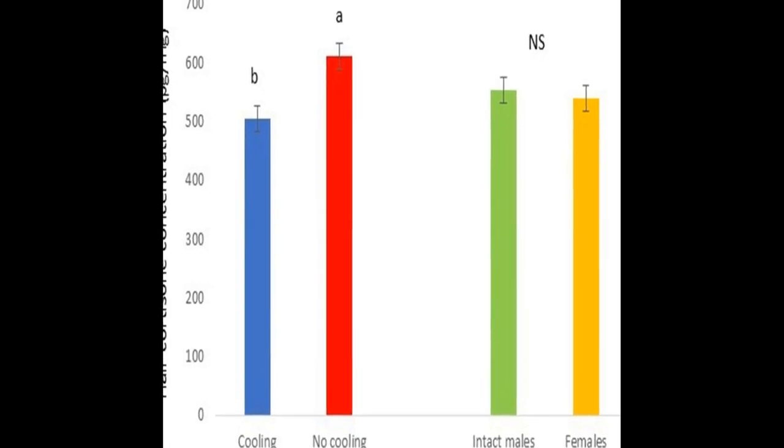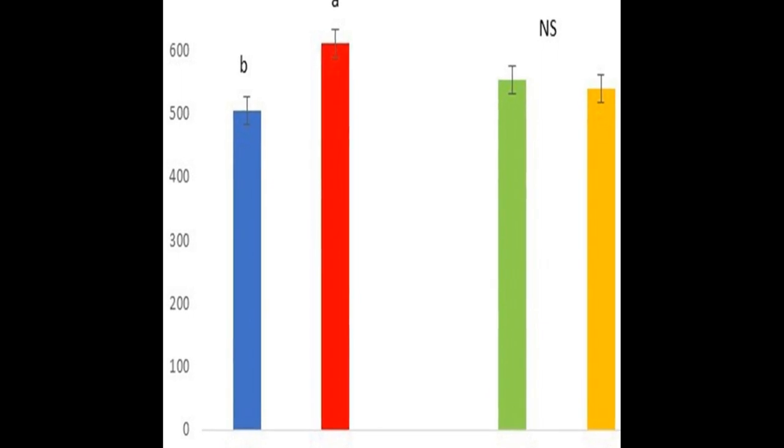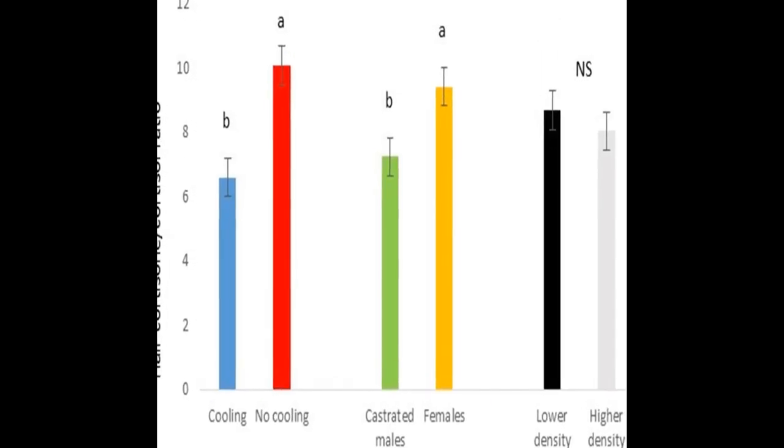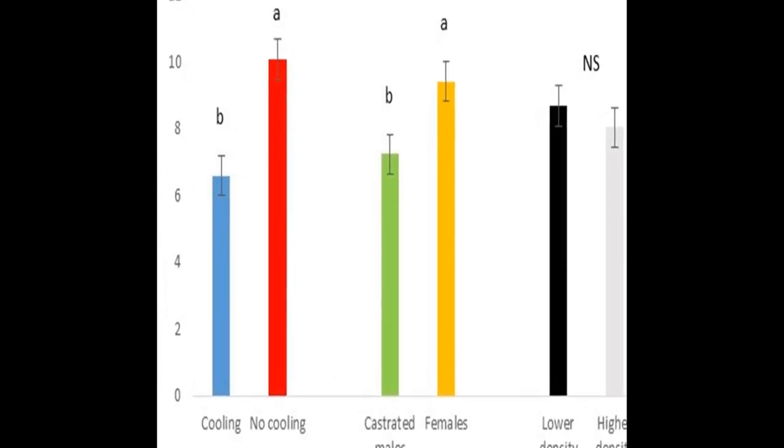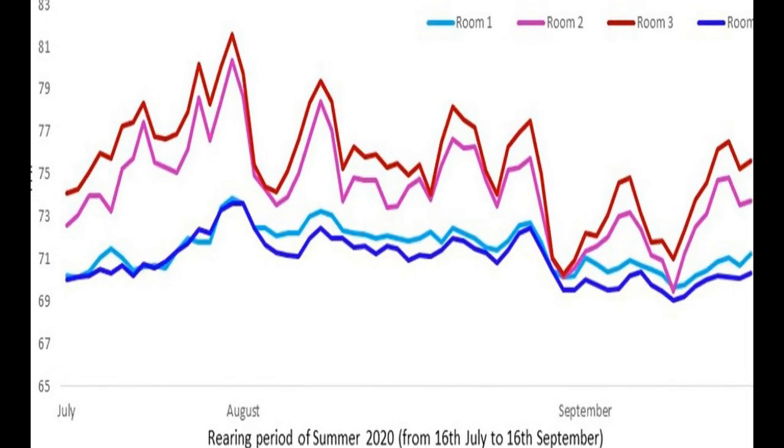Heat stress causes significant financial losses for swine producers worldwide. The aim of this study was to determine and evaluate cortisol and cortisone levels in hair as indicators of thermal stress in growing pigs raised under high environmental temperatures.